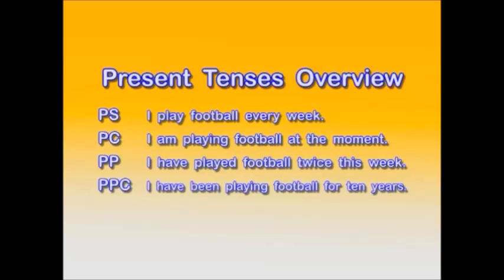Our third example sentence is the present perfect. The structure is: subject (I), auxiliary verb — have or has — plus the past participle. The past participle is usually formed by adding -ed onto the end of the base form of the verb. However, students need to be aware of the many irregular verbs, such as know becoming known, go to gone, understand to understood, and so on. Unfortunately, there are no rules for this, and they just have to be learnt individually.